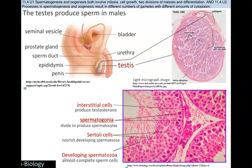Spermatogenesis is occurring within the testes of the male reproductive organs. Looking at a cross-section of the testes, you have interstitial cells on the outside that help produce testosterone. Spermatogonia are the cells that produce the spermatocytes. Sertoli cells are dedicated to nourishing with nutrients the developing spermatozoa. Then you've got the developing spermatozoa, which are almost complete sperm cells at that point.